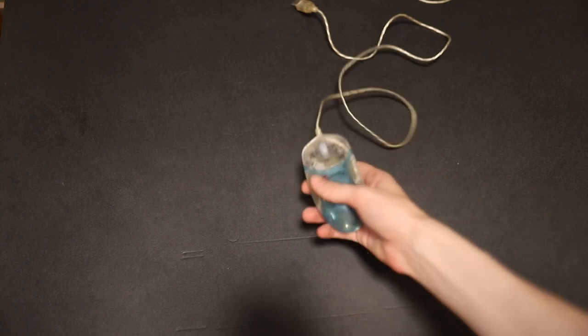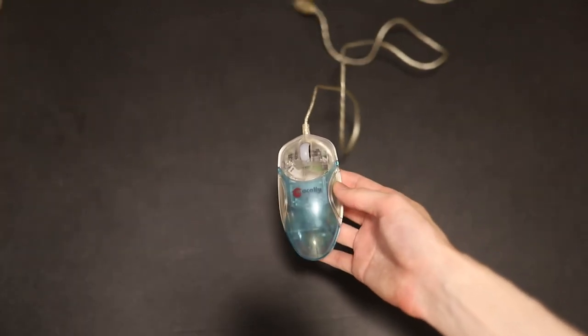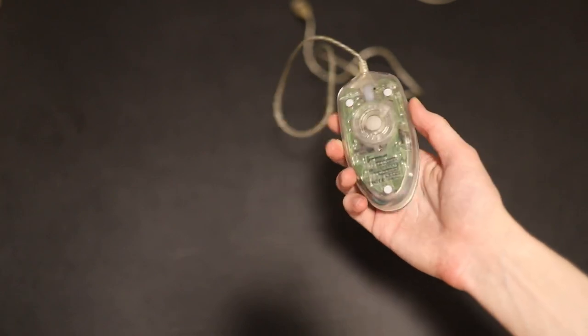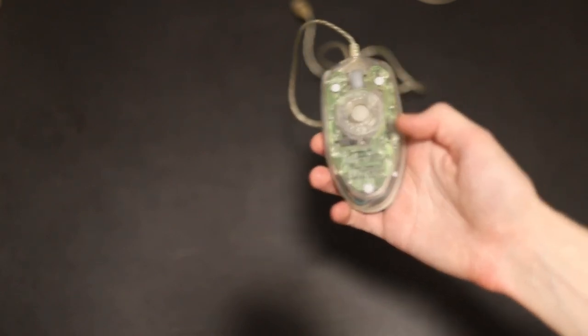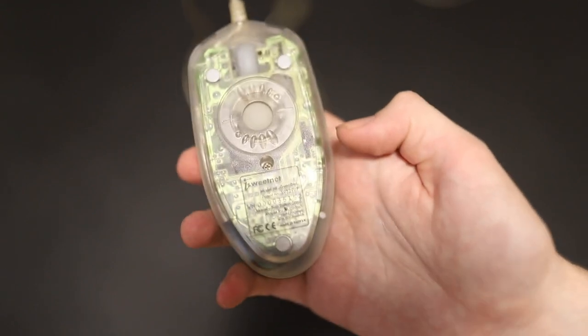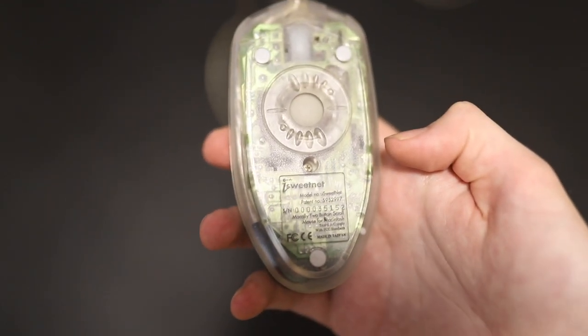This example is of a MacAlly iSweetNet. They had some kind of generic and weird names for their products, but you can see, let's have a look at the label here. Now what is this? Let's talk about it.